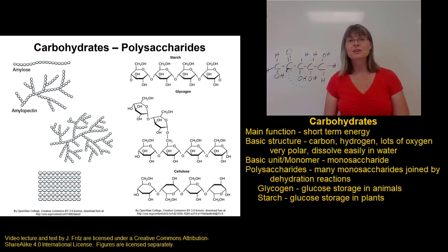Starch serves a very similar function in plants. Starch is the main form of stored glucose in plant cells. Starch comes in a couple of different forms, including amylose, which is a long chain with very few branches, and amylopectin, which branches more like glycogen. So starch stores glucose in plants, and glycogen stores glucose in animals.